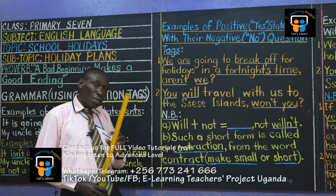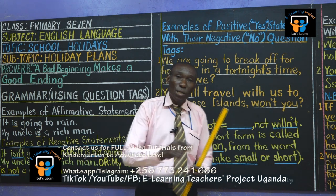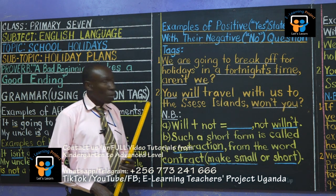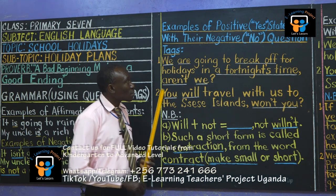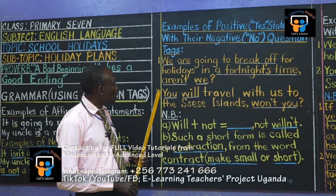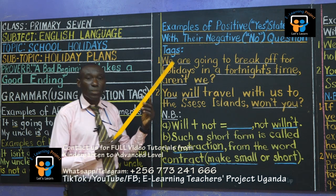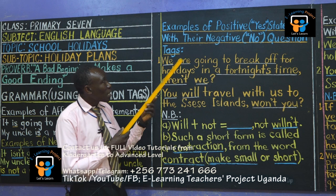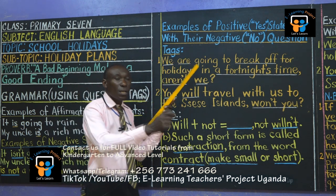We said that each time you have a statement that is positive — that is affirmative — be sure to affix a question tag that has a negative form. So if you have a negative statement, be sure the question tag is in positive or affirmative. Here we want to look at examples of positive or yes statements. We are looking at positive statements that have negative question tags fixed at the end.